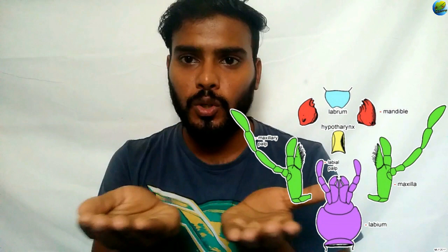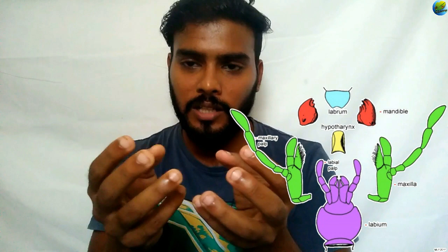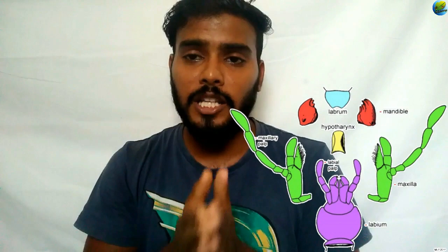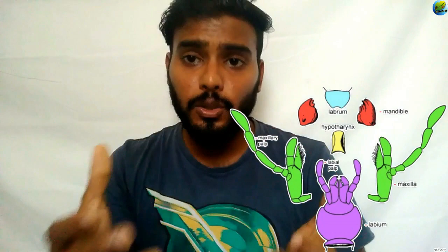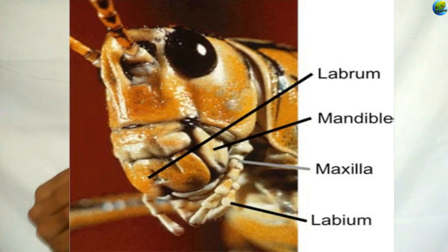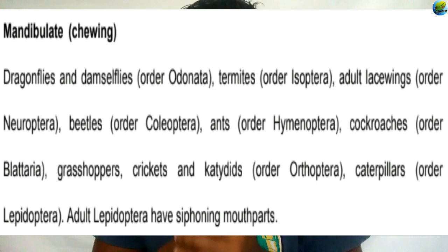In the biting and chewing mechanism, the labrum pulls food inside while the mandibles crush it. The maxillae below the mandibles help hold food in position. The maxillary palp and labial palp sense whether food is edible. After food is cut by the mandibles, both the labium and maxillae help pull food into the esophagus, the first part of the alimentary canal. Examples of insects with biting and chewing mouth parts include dragonflies, immature stages of caterpillars, and termites.